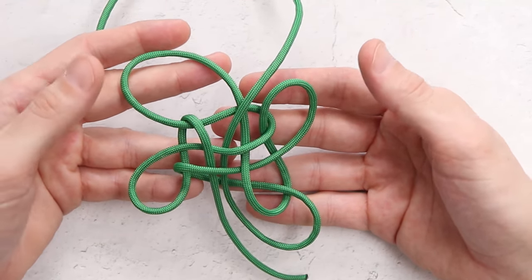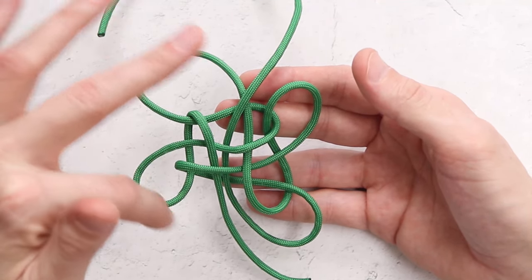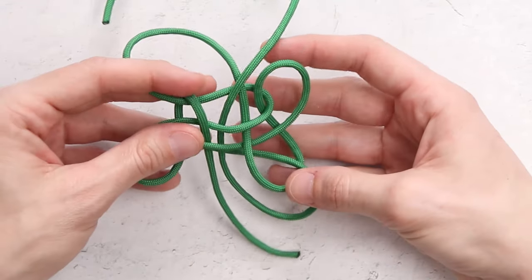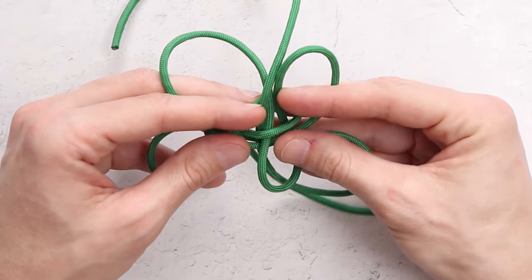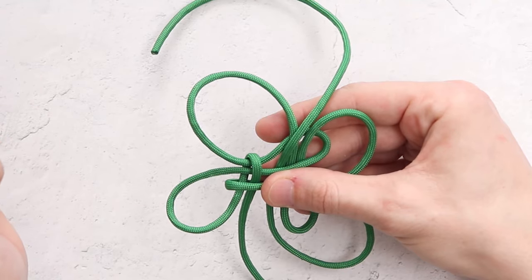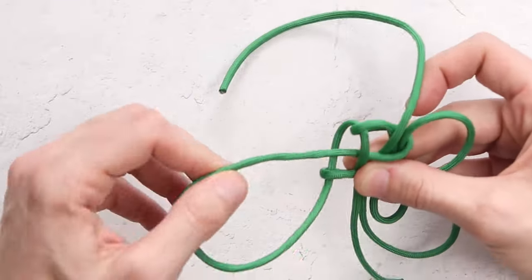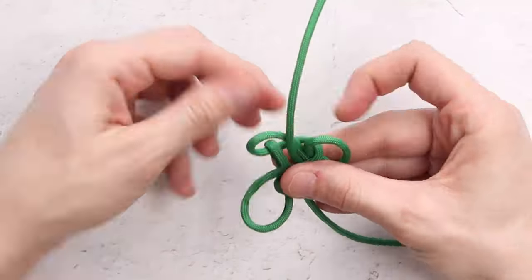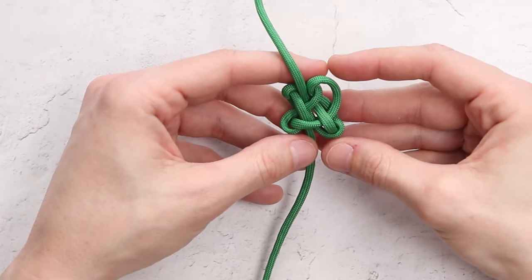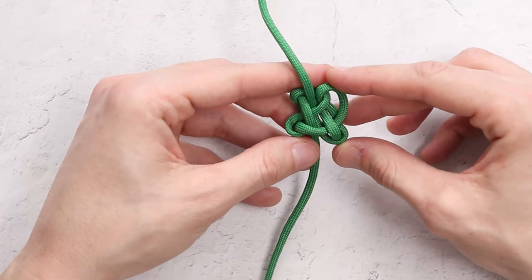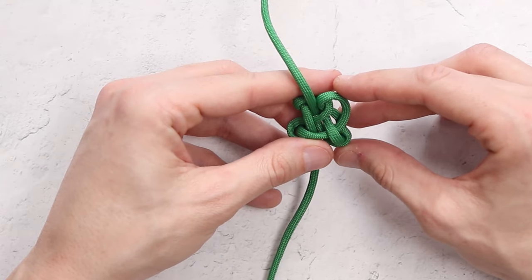So right now, it does look like a jumbled mess, but for the four-leaf clover, this is going to be our top left, bottom left, top right, bottom right. And as long as you keep that in mind, cinching it down is not too complicated. And now, we're just going to start cinching our paracord to make it tighter. And at this stage, you can really see the clover starting to take shape. We're just going to continue to cinch down until we have the knot as tight as we want it.